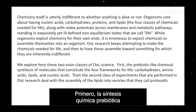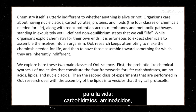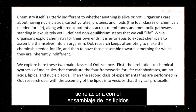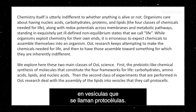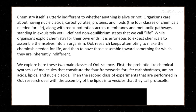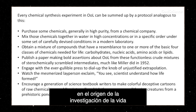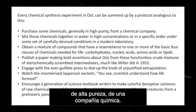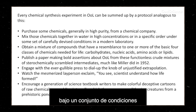Origin of life research keeps attempting to make chemicals needed for life and then have those assembled towards something for which they are inherently indifferent. We explore here two main classes of origin of life science. First, the prebiotic-like synthesis of the molecules that constitute the four frameworks of life: carbohydrates, amino acids, lipids, and nucleic acids. Then, second, how origin of life research deals with assembly of those into vesicles that they call protocells.